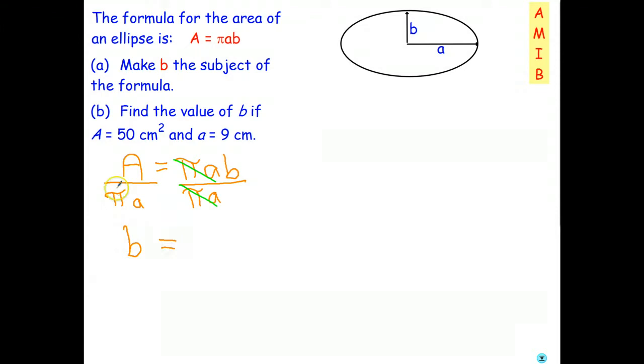And the expression, the answer, on the right side. So there's our formula for B. Next step is to substitute B equals, in place of A, I write 50. In place of little a, I write 9.